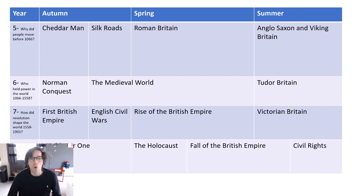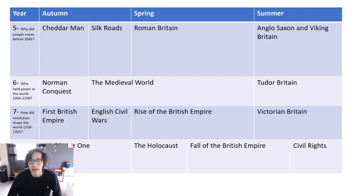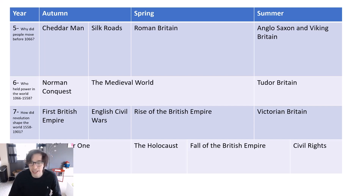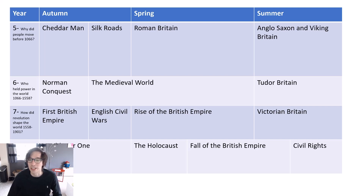With the fall of the British Empire we'll be able to see what happened around the world — different revolts, rebellions, and wars that caused our empire to slowly decline. Then lastly, at the end of the year, we'll be looking at civil rights: the rights of disabled people, gay people, women's rights, and Black rights — civil rights across the board and how those have changed, particularly in Britain, with comparisons to America as well.